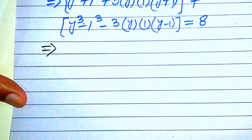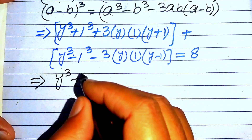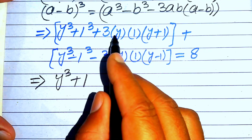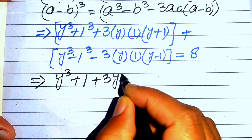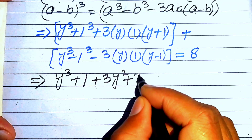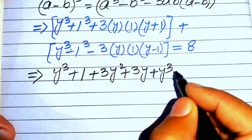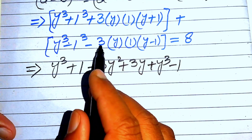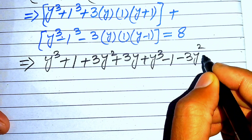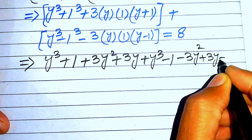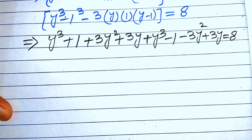Now we simplify by opening the brackets. From the first term: y³ + 1 + 3y² + 3y. From the second term: y³ − 1 − 3y² + 3y. The whole equation equals 8.